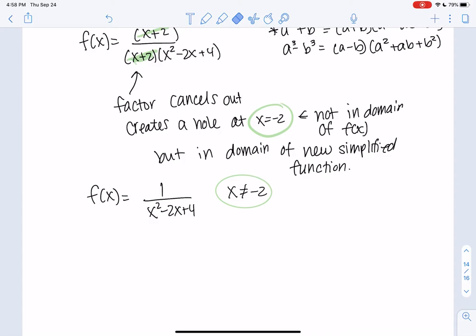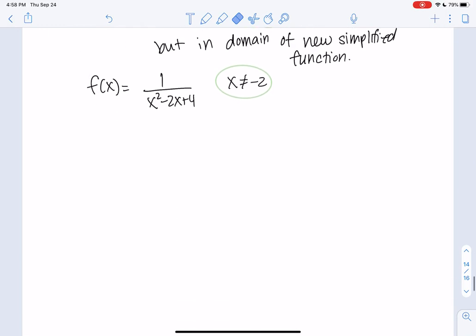So let's go ahead and find some intercepts, if there are any. And asymptotes. So the y-intercept is when x is 0. We'll just plug in 0. We can use the new simplified version. We'll get the same number either way. Looks like we get 1 fourth. 0, 1 fourth.